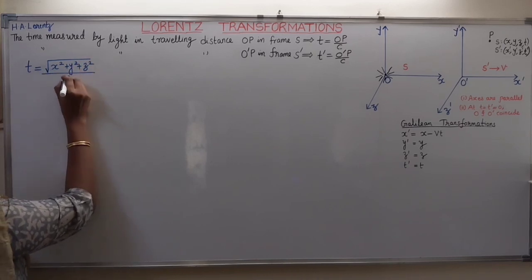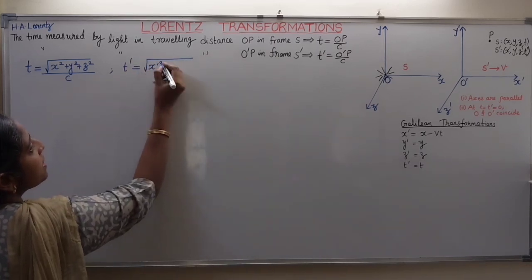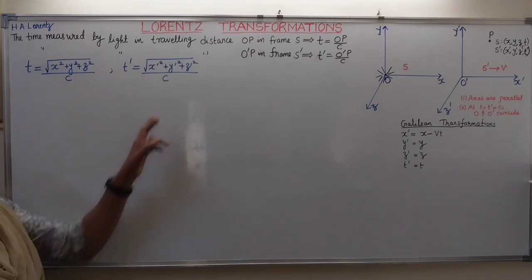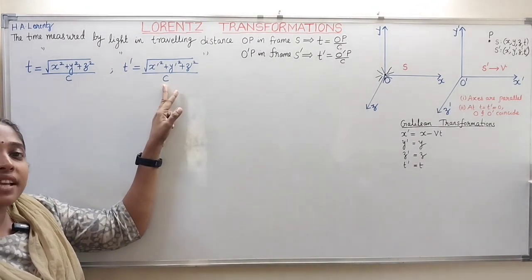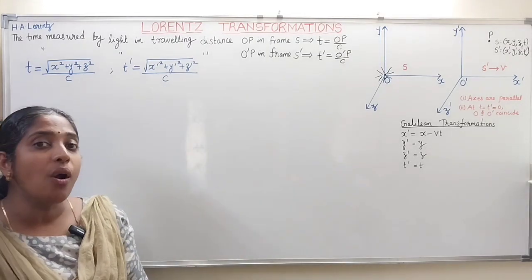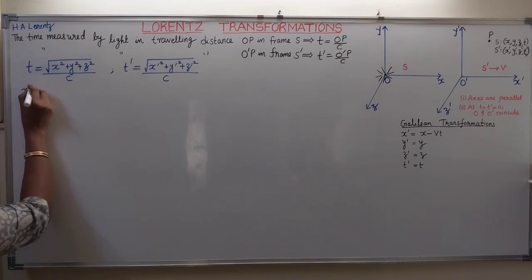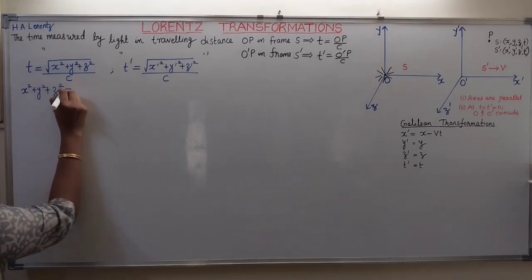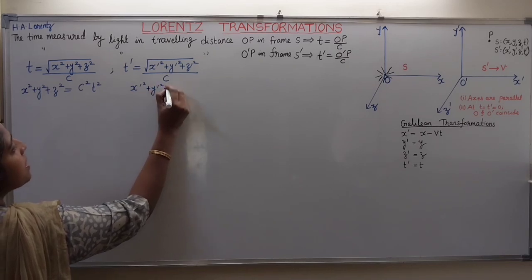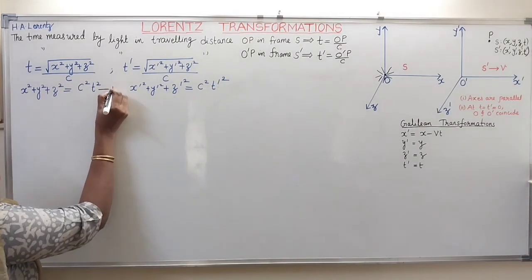So t is equal to OP by c, where OP is the square root of x² + y² + z² divided by c. And t' is equal to O'P by c, where O'P is given by the square root of x'² + y'² + z'² divided by c. Here c is constant — the speed of light — which, according to the second postulate of special theory of relativity, is invariant and remains constant in all inertial frames. So we write: x² + y² + z² = c²t² (equation 1) and x'² + y'² + z'² = c²t'² (equation 2).